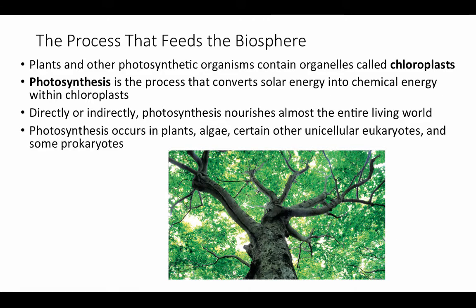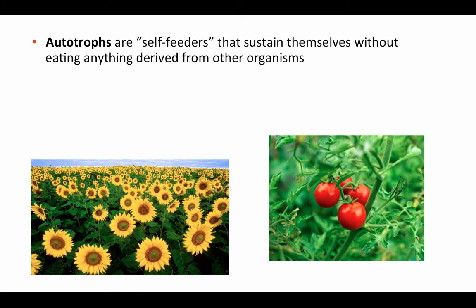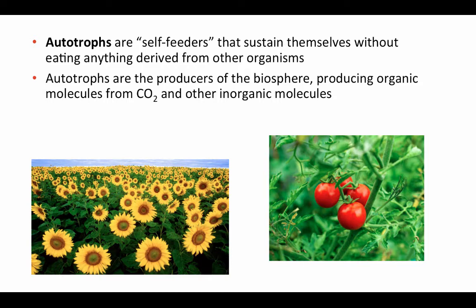Photosynthesis occurs in plants, but it also occurs in green algae, certain other unicellular eukaryotes, and some prokaryotes. Autotrophs are self-feeders — these are organisms able to fix carbon from CO2 into sugar molecules to provide their own food, and they can do this without consuming any other organism. Autotrophs are the producers of the biosphere, producing organic molecules from CO2 and other inorganic molecules in their environment.